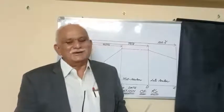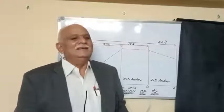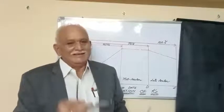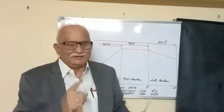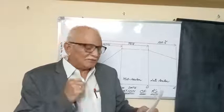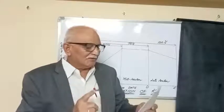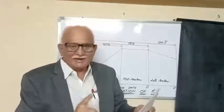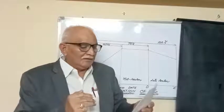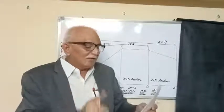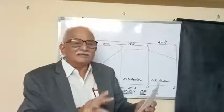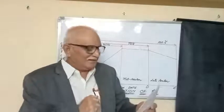Dear students, welcome to our class on crop coefficient KC. The definition of crop coefficient KC is the ratio of evapotranspiration observed for the crop studied over that observed for a well-calibrated reference crop under the same conditions.